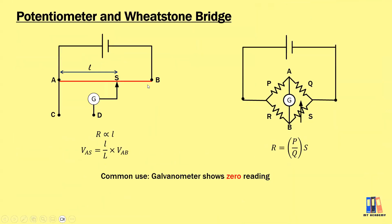We move on to the last topic: the potentiometer and the Wheatstone bridge. The common feature is that we want the galvanometer G to show zero reading. For the potentiometer, zero reading allows us to determine the balance length. When G reads zero, no current flows between the two points, and the voltage formula can be used to obtain the unknown voltage. For the Wheatstone bridge, we use the ratio of resistances. When G shows zero, no current flows between points A and B, so P/Q equals R/S. This is useful for determining an unknown resistance.